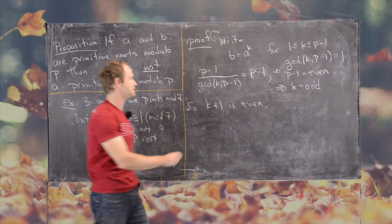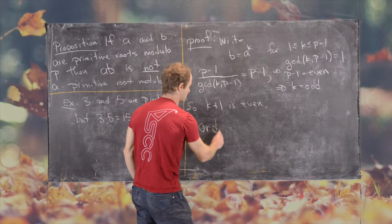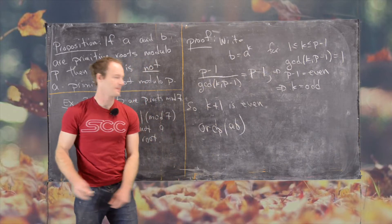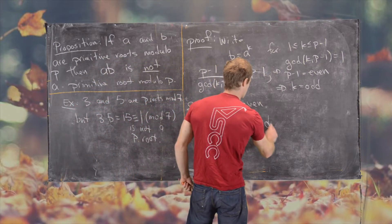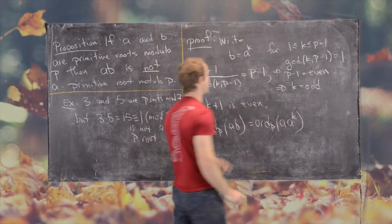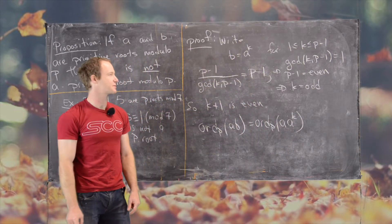And now what we want to do is calculate the order modulo P of A times B. But that's equal to the order modulo P of A times A to the K, because of our expression for B.